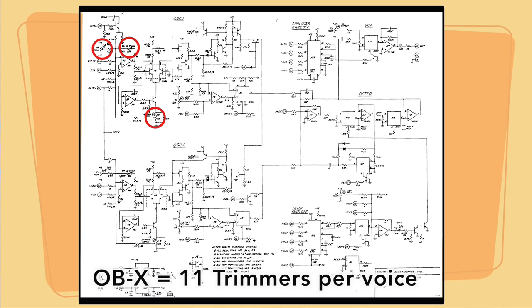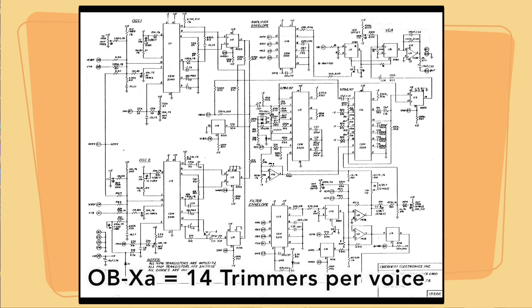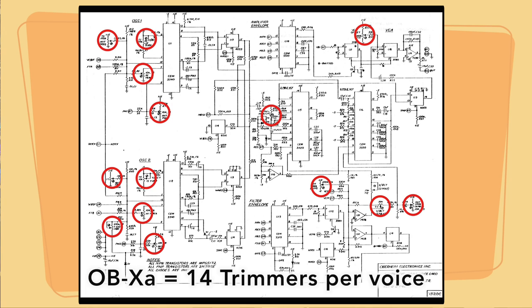While the OB-X had 109 trimmers or adjustments internally, the OB-XA ballooned to 145 adjustments in order to properly adjust all of the voice and split and double features. This started to become a bit problematic, both in production and in reliability in the field, because there were so many adjustments that affected the sound of the synthesizer. So with the OB-8, one of the goals was to try to reduce the amount of calibrations and make the system smarter in how those calibrations were performed.